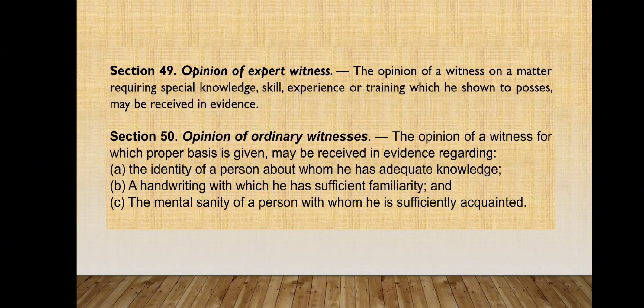Section 50: Opinion of Ordinary Witness. When may an ordinary witness give his opinion? Under Section 50 of the Rules of Court, an ordinary witness may give his opinion regarding the identity of a person about whom he has adequate knowledge, a handwriting with which he has sufficient familiarity, the mental sanity of a person with whom he is sufficiently acquainted, and his impression of the emotion, behavior, condition, or appearance of a person.